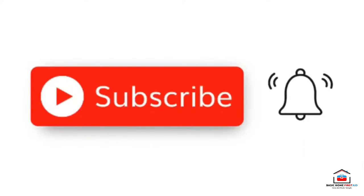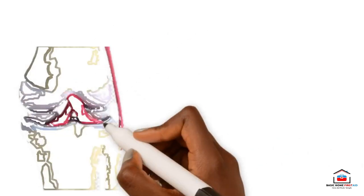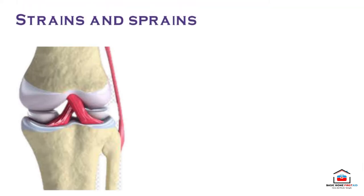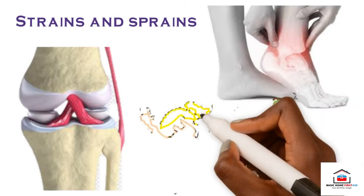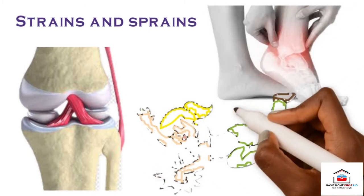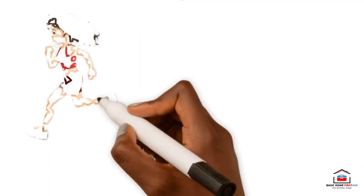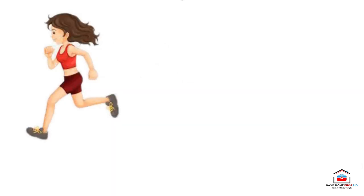The softer structures around bones and joints — the ligaments, muscles, and tendons — can be injured in several ways. Injuries to these soft tissues are commonly called strains and sprains. They occur when the tissues are overstretched and partially or completely torn by violent or sudden movements. For this reason, strains and sprains are frequently associated with sports.